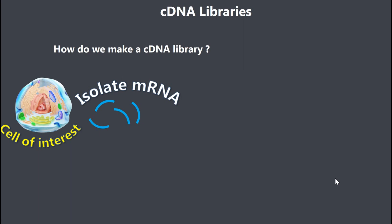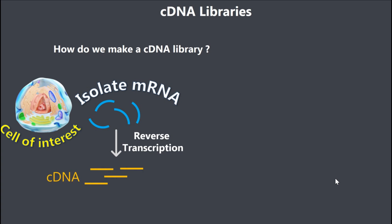We are basically going to use reverse transcription to create the DNA version of the RNA. Once we have the cDNA, we need to add restriction sites to the ends, because we want to keep the cDNA intact.